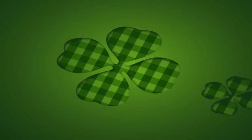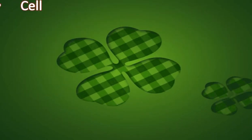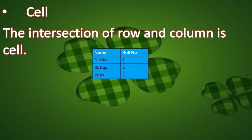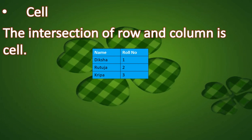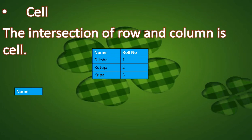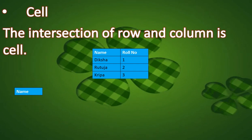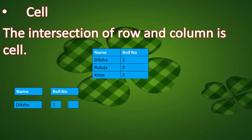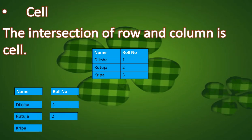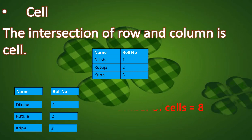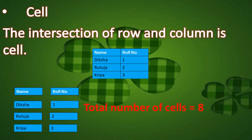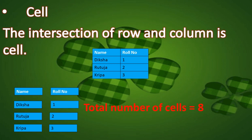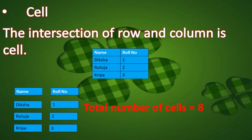Next we will see what a cell is. A cell is the intersection of a row and a column. In this table there are eight cells — first, second, third, fourth, fifth, sixth, seventh, and eighth. So in this table there are eight cells. Now we understand row, cell, and column.